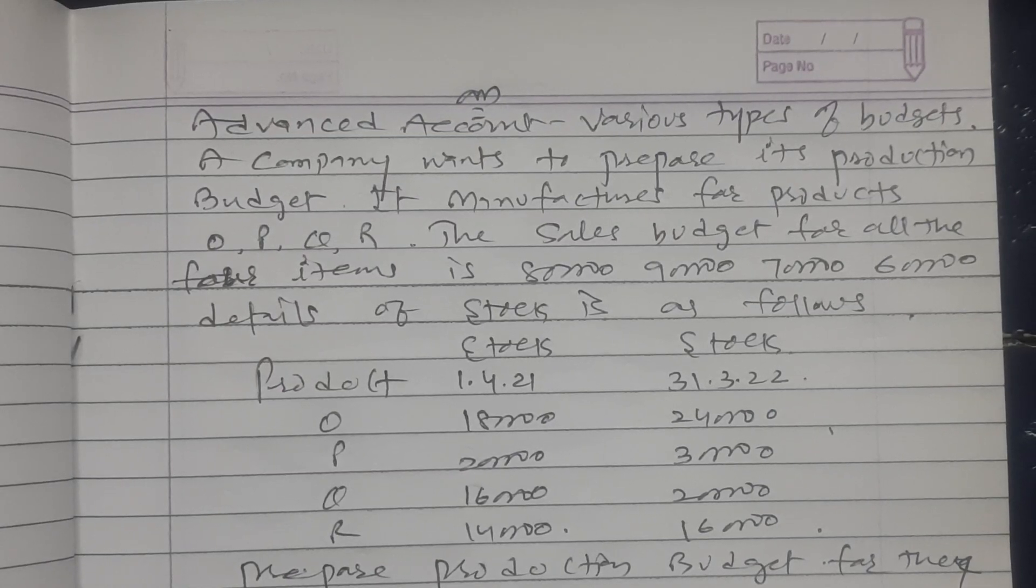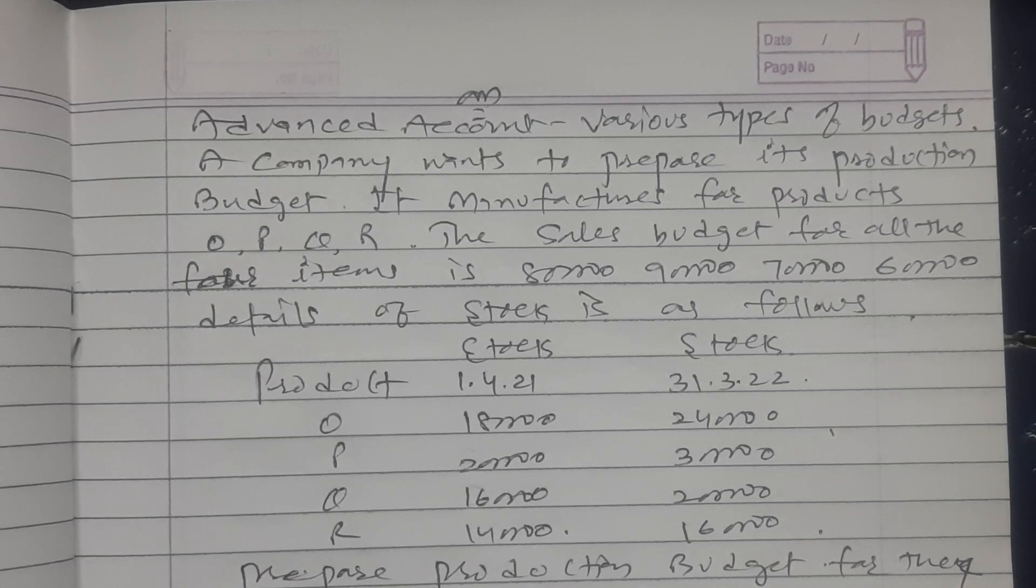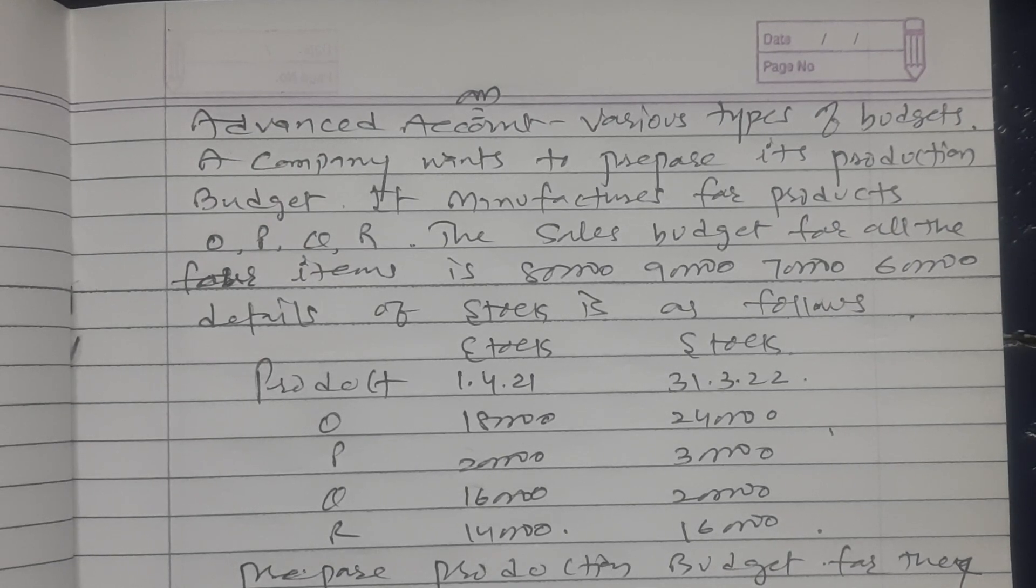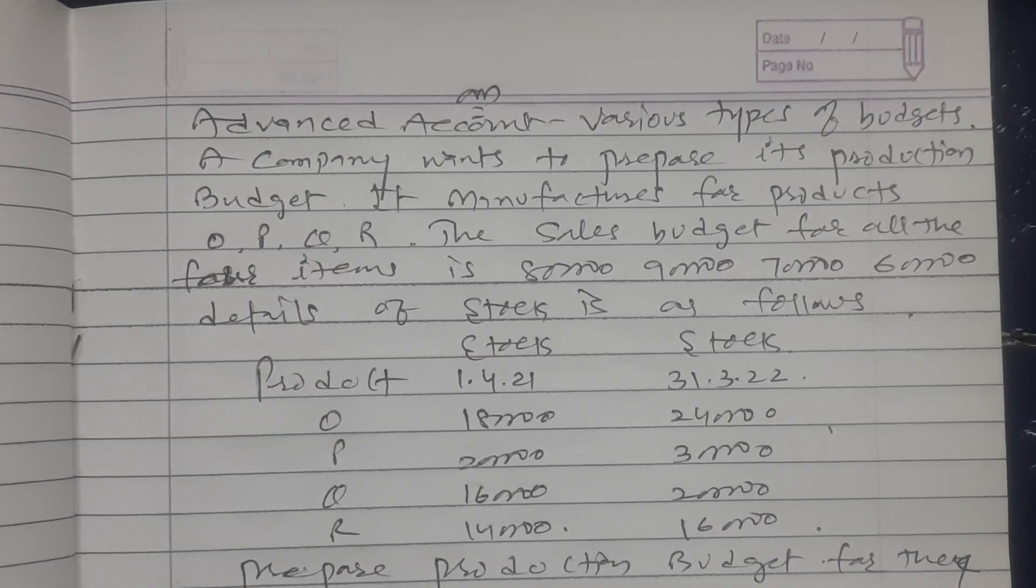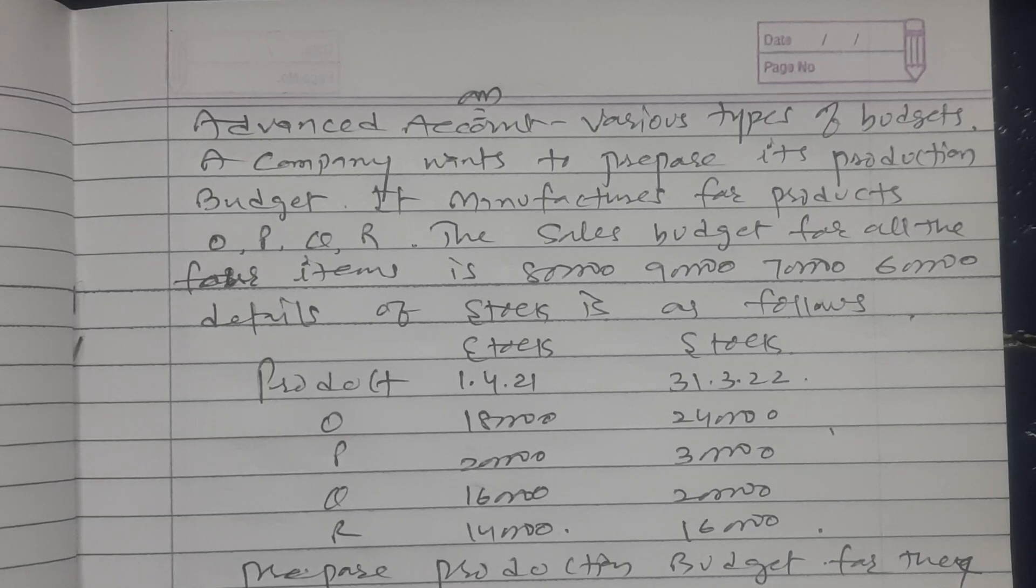Hello students, welcome to my YouTube channel Sun Academy. Today in this lecture we are going to solve a question of preparing various types of budgets in advanced accounts for TYBCOM. As you can see, the question is: a company wants to prepare its production budget. It's manufactured for products O, P, Q, R.